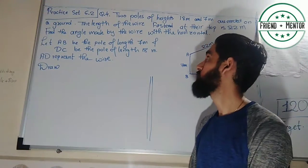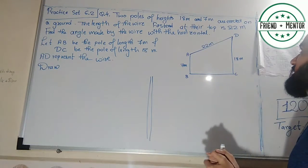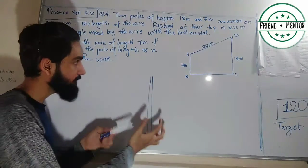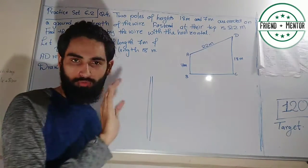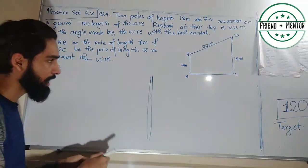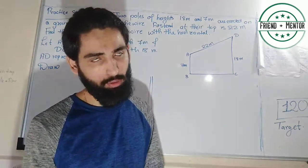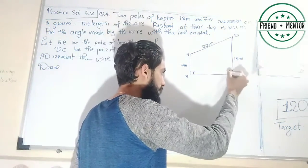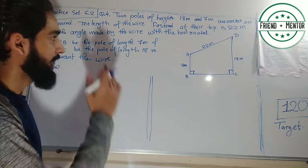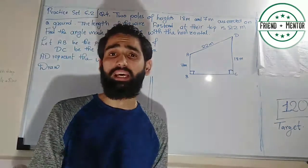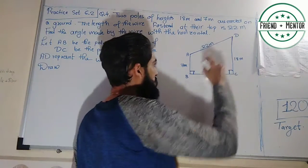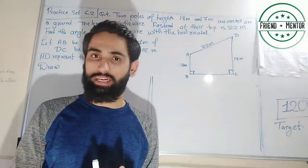Question number 4: Two poles of height 18 meters and 7 meters are erected on the ground. I have already made a diagram — EB represents the pole of height 7 meters and CD represents the pole of height 18 meters. Both poles are placed perpendicular to the ground. A wire of length 22 meters has been tied, represented by A-D.